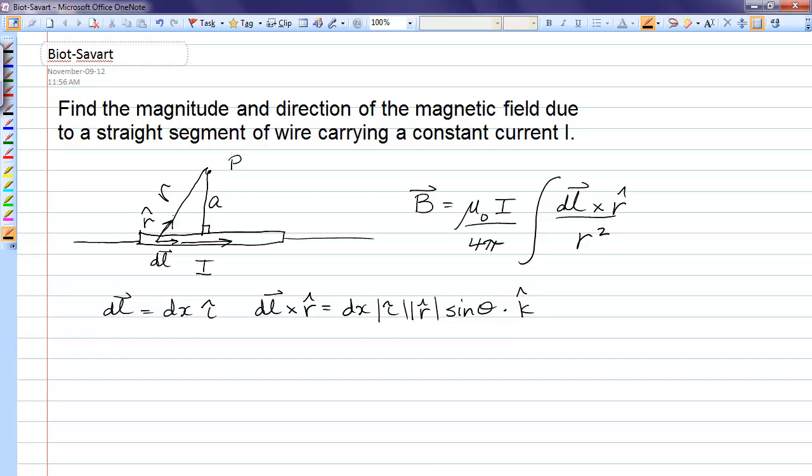Theta is the angle defined between r and dl. Now the magnitudes of i-hat and r-hat are just one because they're unit vectors. So we get dx sine theta k-hat for that cross product.